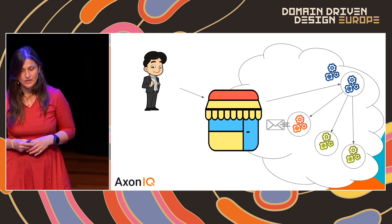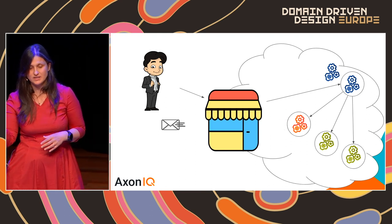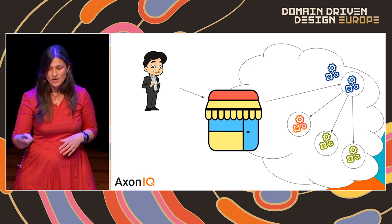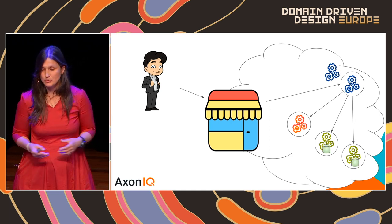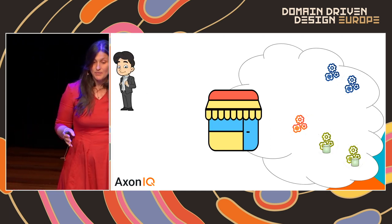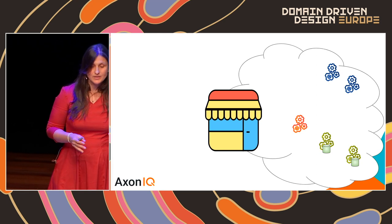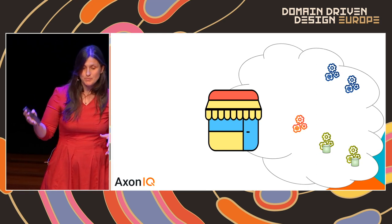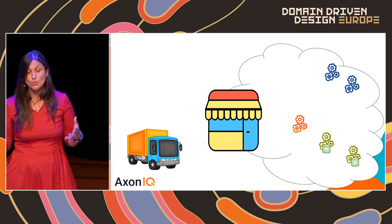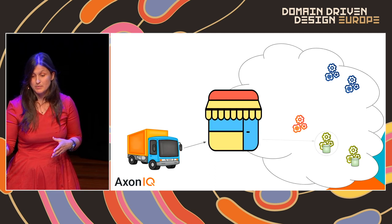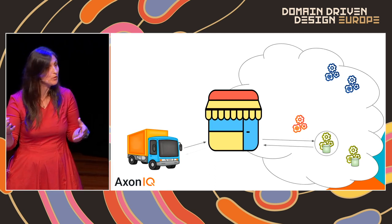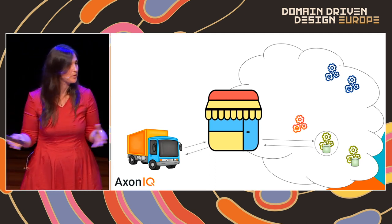The customer wants to confirm an order. The system sends a confirm-order command to a component, which verifies if it's possible and publishes order-confirmed events to all interested components. For example, the orange component sends an email, the green ones update projections, and the shipping department queries the system to retrieve the list of confirmed orders to ship.